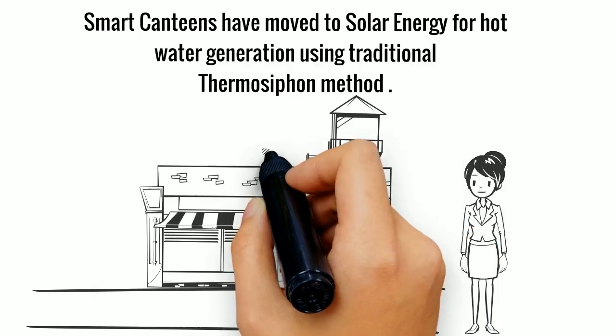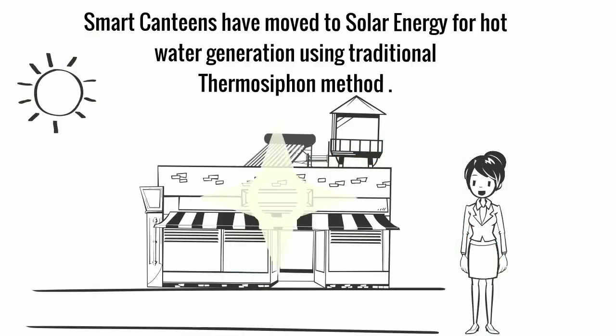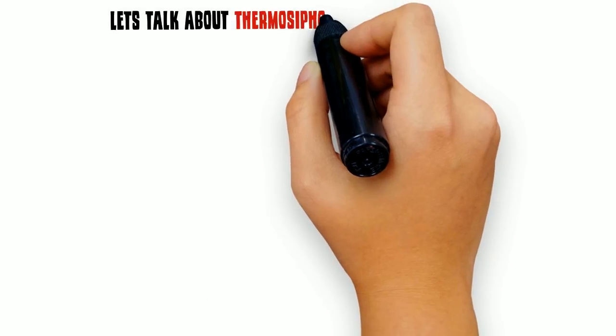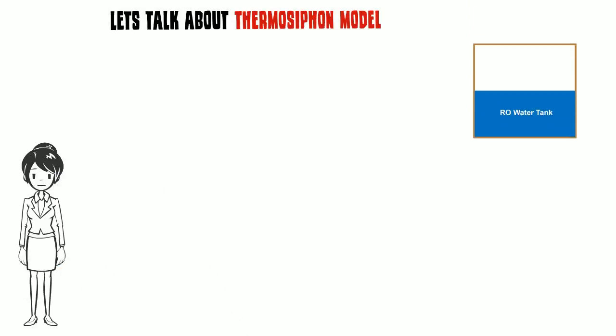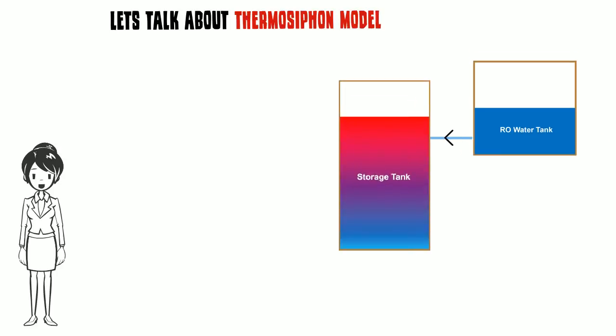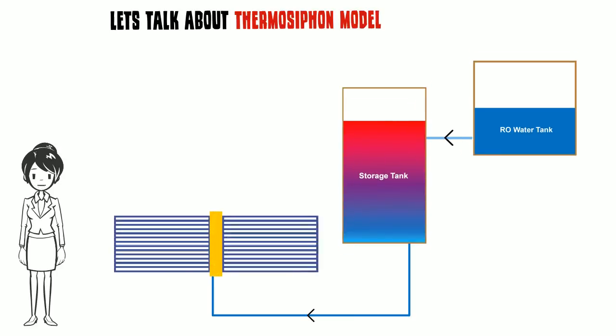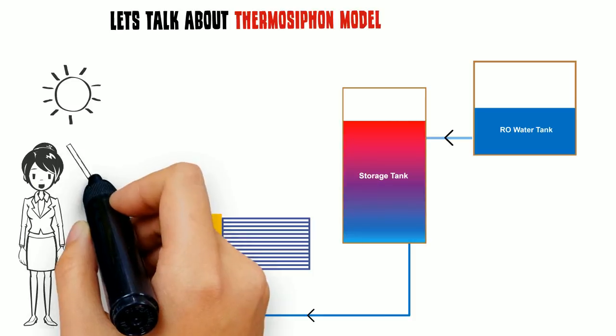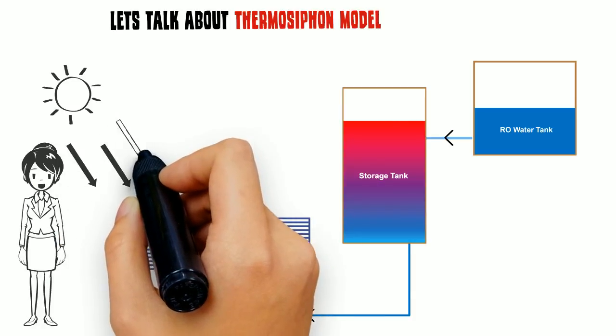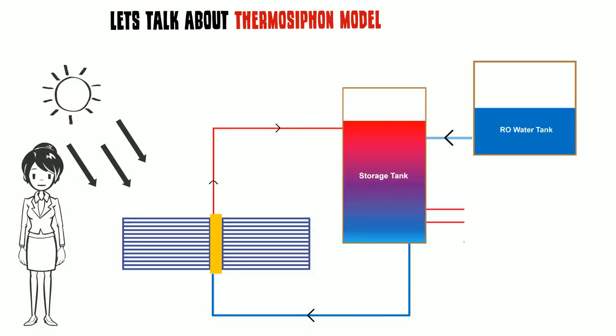Smart canteens have moved to solar energy for hot water generation using traditional thermosiphon method. First, water is sent into storage tank and from there water flows to solar collector. Again the heated water is back to storage tank. From storage tank you can get hot water.